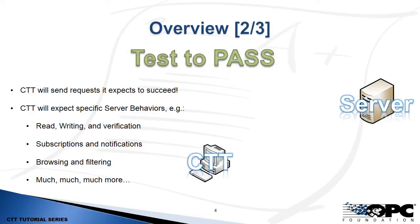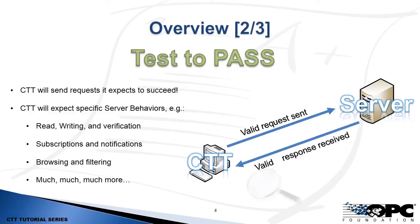What does it mean when we talk about tests to pass? The CTT will send specific instructions to the server because it's expecting certain behaviors — perhaps we're doing a read, write, or setting up a subscription — and then when the server responds, the CTT is checking those responses to make sure they match the expectations it's programmed with. These tests occur for all UA behaviors: reading, writing, subscriptions, browsing, events, etc.